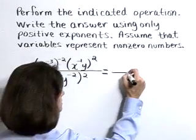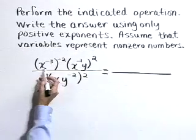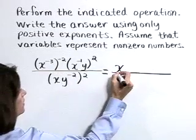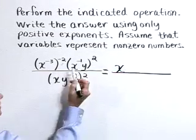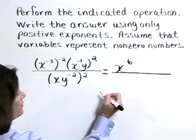So in the numerator, x to the negative 3 raised to the negative 2 is x to the negative 3 times the negative 2, or positive 6 power.